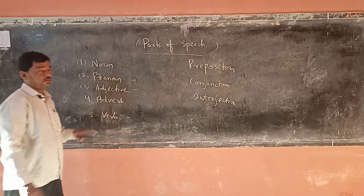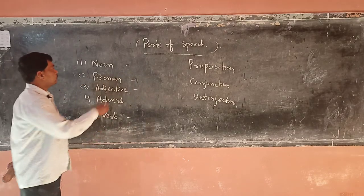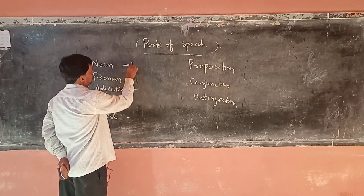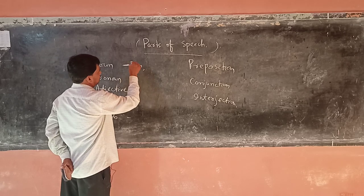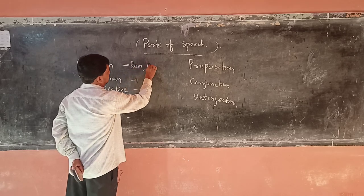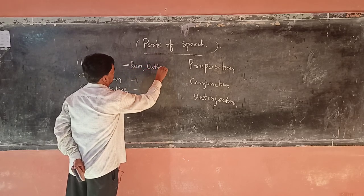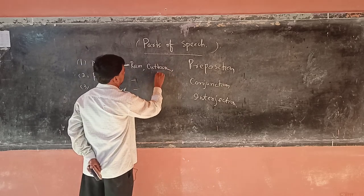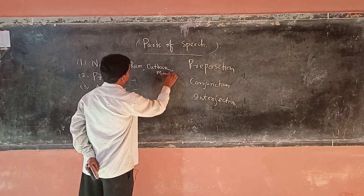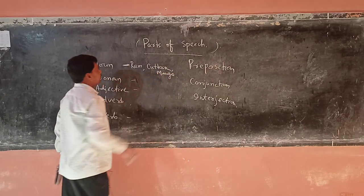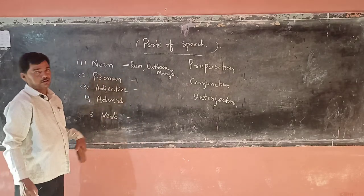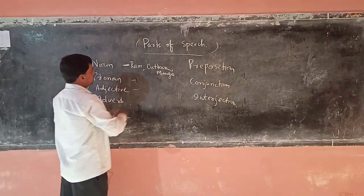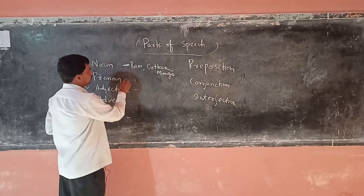The basic rule: every name is a noun. For example, Ram, Katak, mango — name of a person, name of a place, name of a thing — all would be nouns.